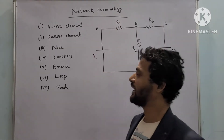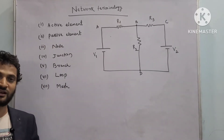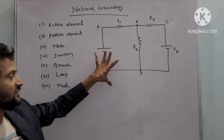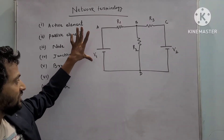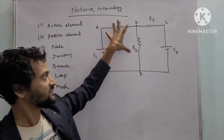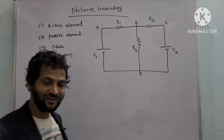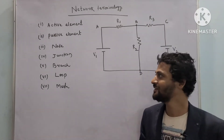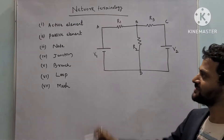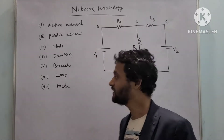First we will start from the active element. Active element is that which will supply electrical energy to the circuit — that is called active element, like a battery. If we consider a circuit, there are two sources of potential difference V1 and V2 which are responsible to supply power to the circuit. That means V1 and V2 are the active elements. Active elements are such elements which supply electrical energy to the circuit.